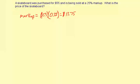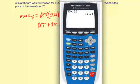To find the total price, take the $55 plus $13.75, which equals $68.75.